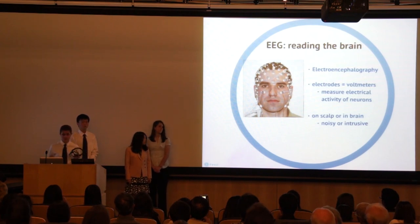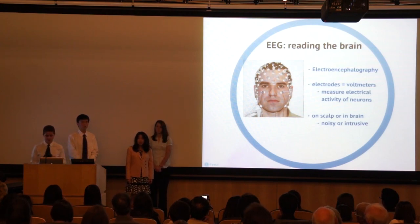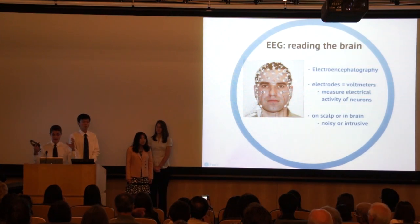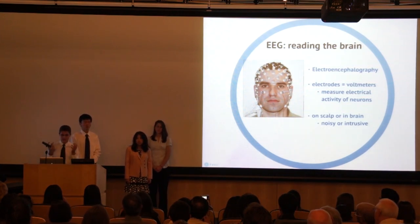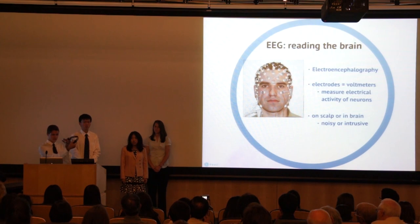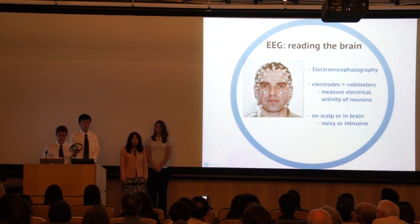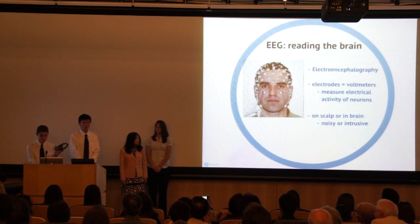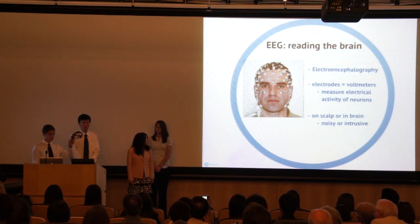The signal from scalp electrodes is not completely clear — it's kind of noisy. If you want a completely clear signal, you have to actually implant these electrodes into the brain. The data from this goes into the BCI, which processes it.